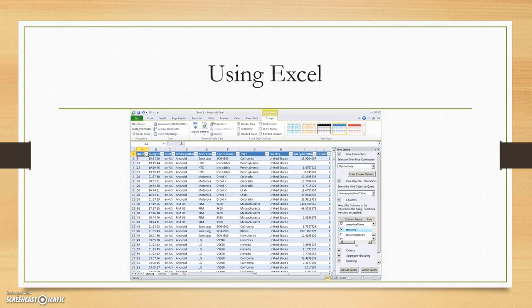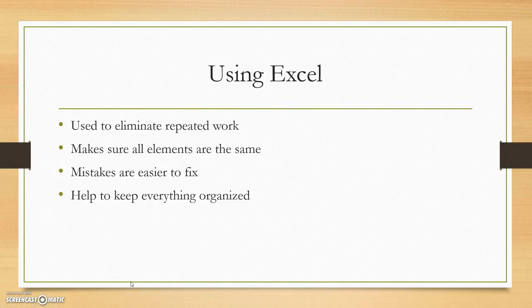We use Excel, where we input all the material we got from the veteran — pictures, documents, publications, everything — using the different tabs as you see at the bottom. We use Excel because it helps us eliminate repeated work, since a lot of things are put into several different forms. It also makes sure all the elements are consistent: when we have a description in three or four different places, it's always the same. Mistakes are easier and quicker to fix, and it helps keep everything organized.